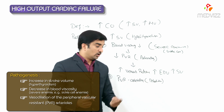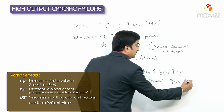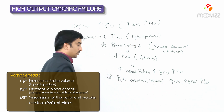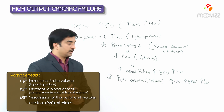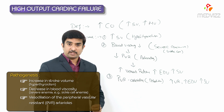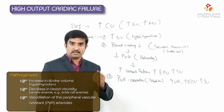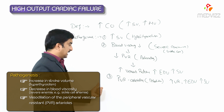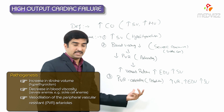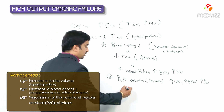This also causes an increase in venous return, increase in end diastolic volume, and increase in stroke volume. To summarize the mechanisms so far: first, an increase in stroke volume as seen in hyperthyroidism; second, a decrease in blood viscosity, for example in severe anemia or sickle cell anemia; and third, vasodilation of peripheral vascular resistant arterioles, which can be seen in thiamine (B1) deficiency or early phase of endotoxic shock.